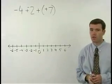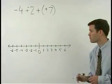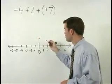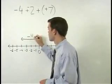Now we can use our number line to help us visualize what's going on in this problem. Starting at 0, negative 4 moves us 4 units to the left along our number line.